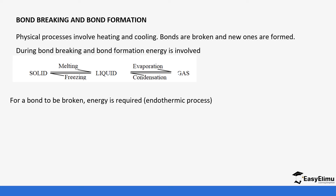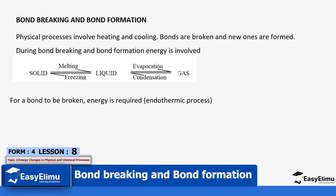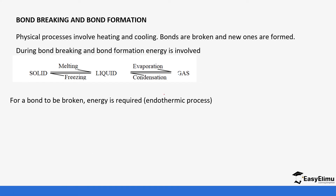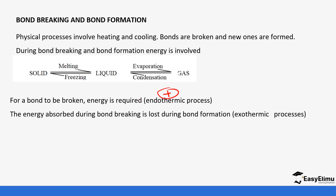For a bond to be broken, energy is required, so we need to absorb energy. That's the reason why it's an endothermic process, so their values are positive. The energy absorbed during bond breaking is lost during bond formation. So whatever energy you absorbed when breaking bonds, when new bonds are forming, that energy is given off. We refer to that as an exothermic process and the values are negative.